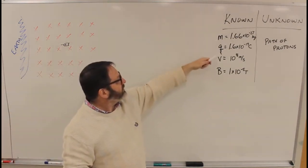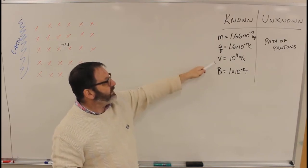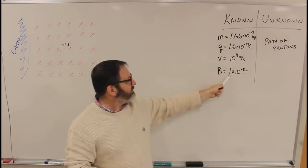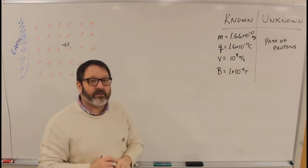For the protons, we know the mass, we know their charge, we're given their velocity—10 to the 8th meters per second—and we know the magnetic field is 1 times 10 to the minus 5 Tesla.